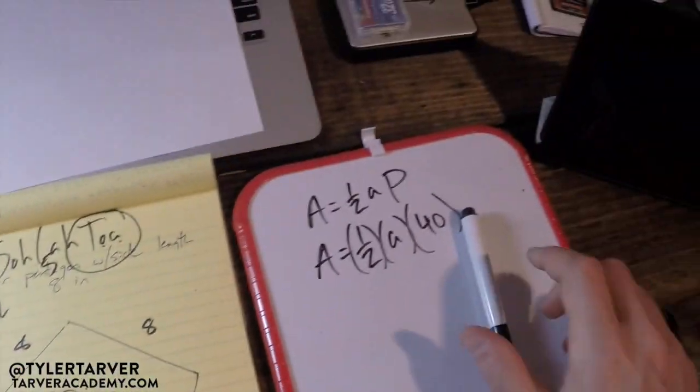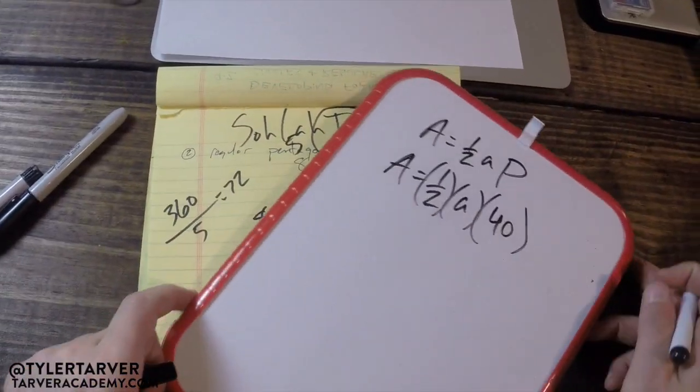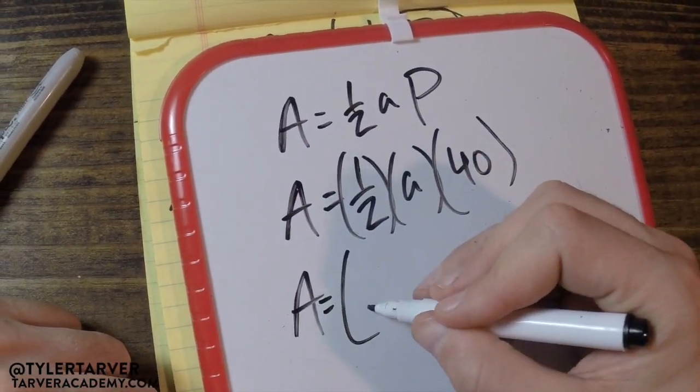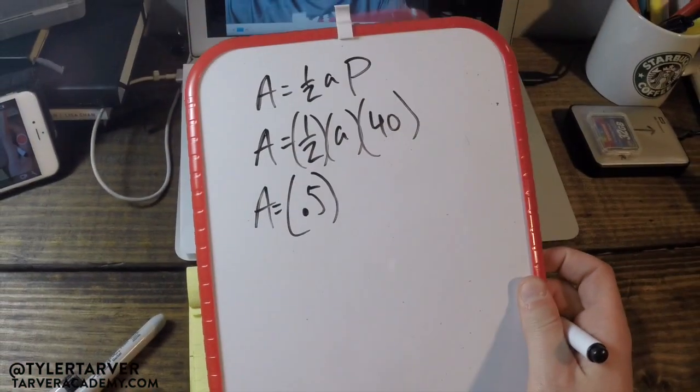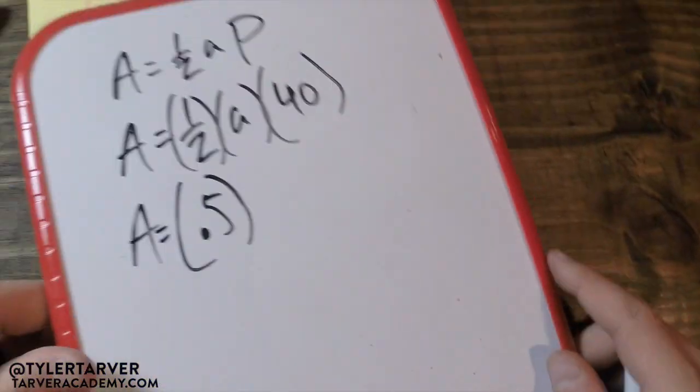Let's go ahead and write it into our problem. Area equals—I like to put this as 0.5, it makes it less confusing, that's just my personal preference, you don't have to, I just think fractions can get easily messed up on a calculator. And I know my apothem is 4 over tangent 36 times 40.